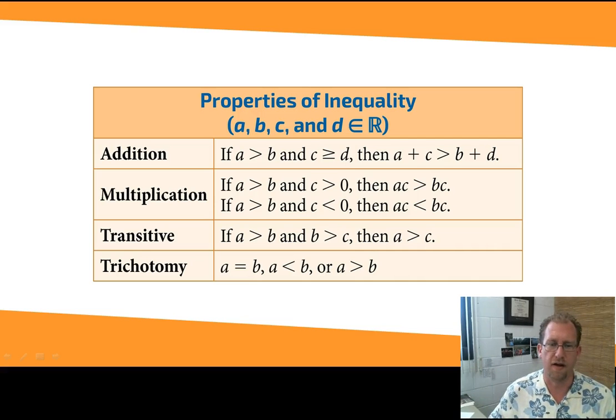If you have A is greater than B, let's do 5 is greater than 4, and C is 2, then 10 is still greater than 8. So, that works. But if you have 5 is greater than 4 and negative 2, then you have to switch the sign. Because, look at this, 5 times negative 2 is negative 10, which is less than 4 times negative 2, which is negative 8. Negative 10 is less than negative 8. So, the direction of the inequality switches if you multiply by a negative number.